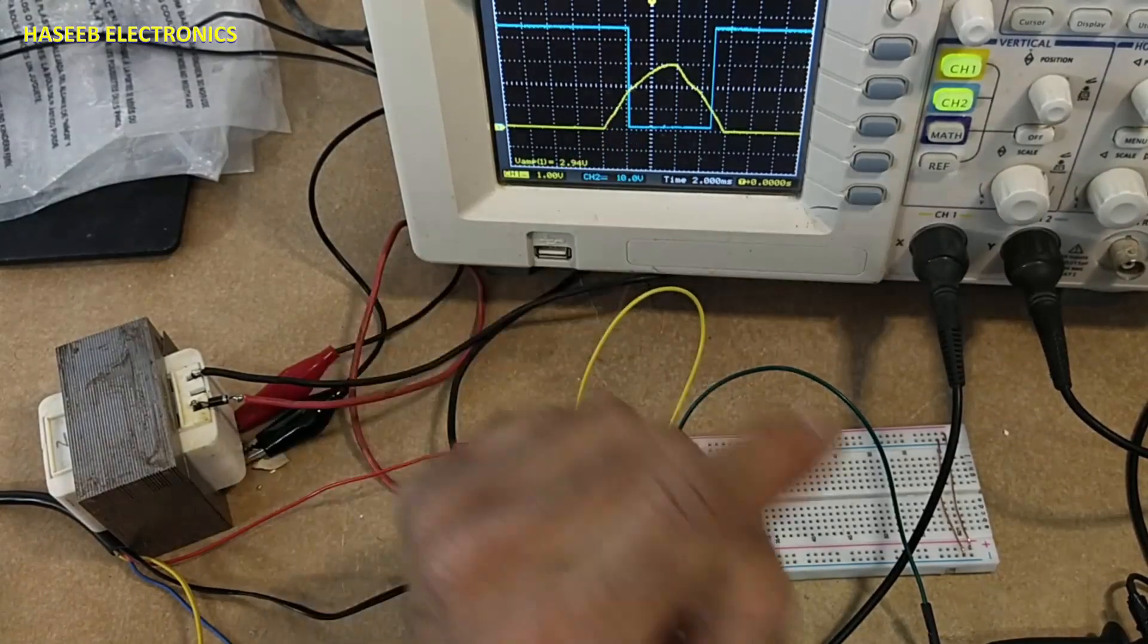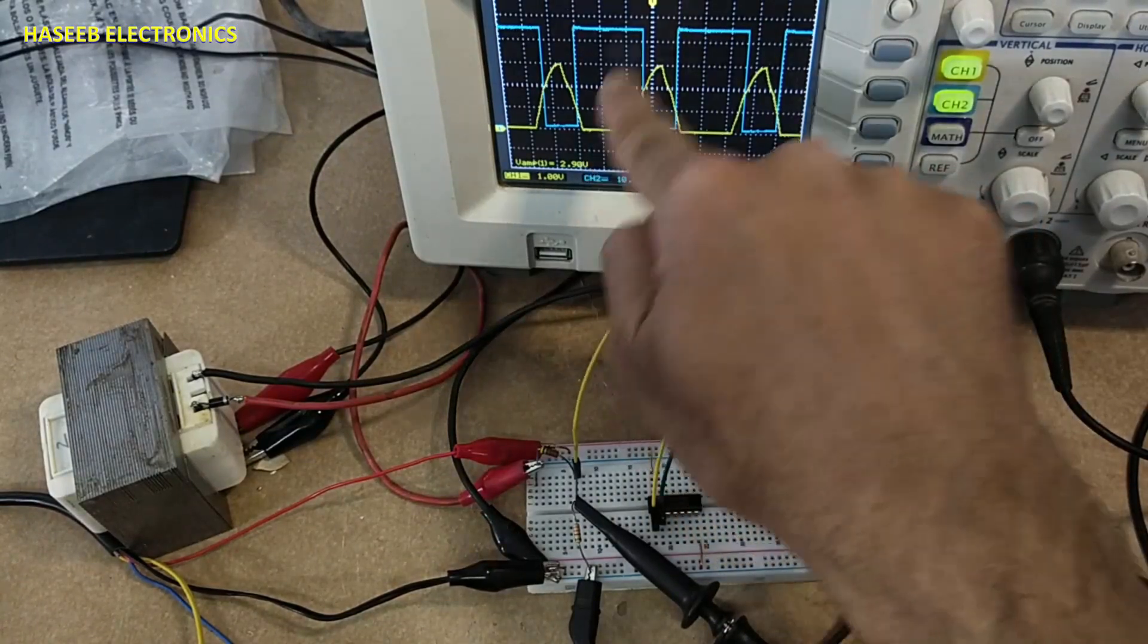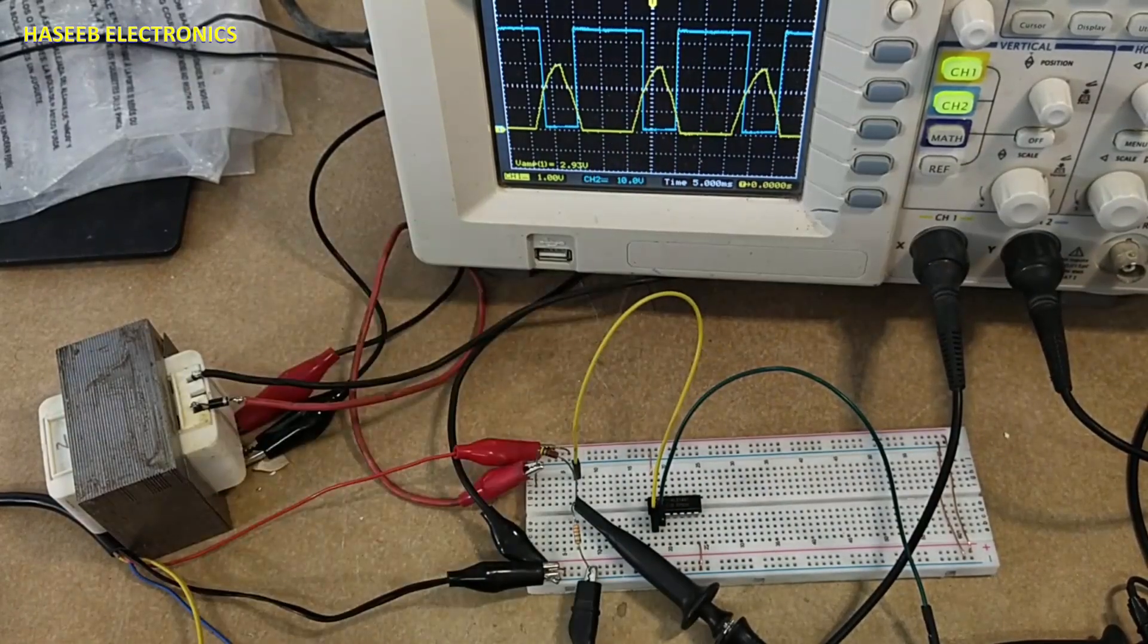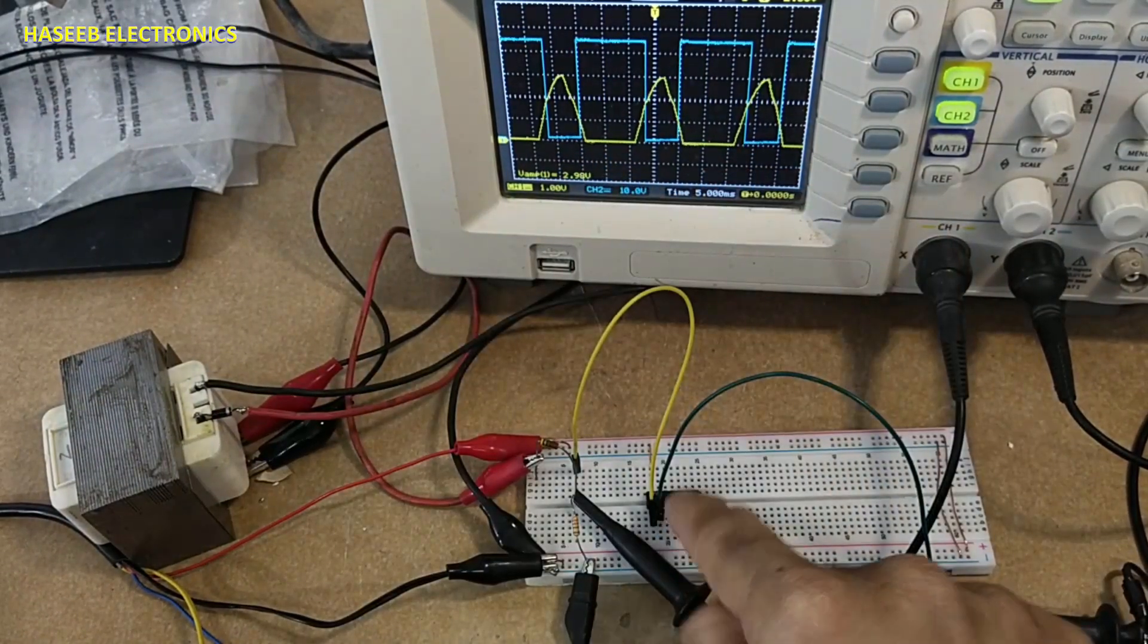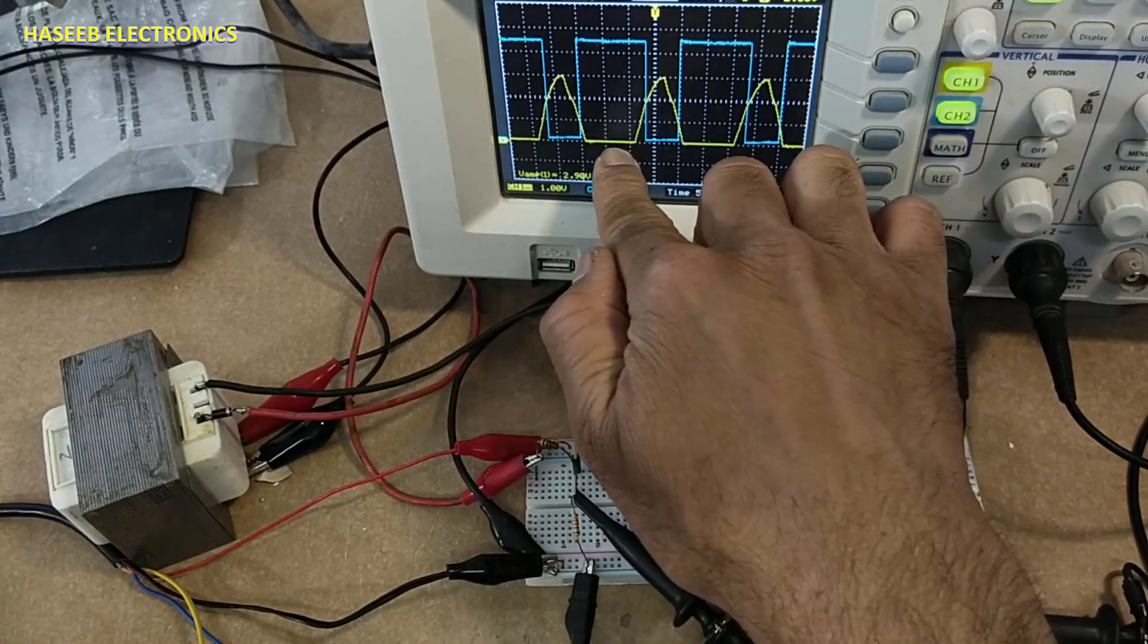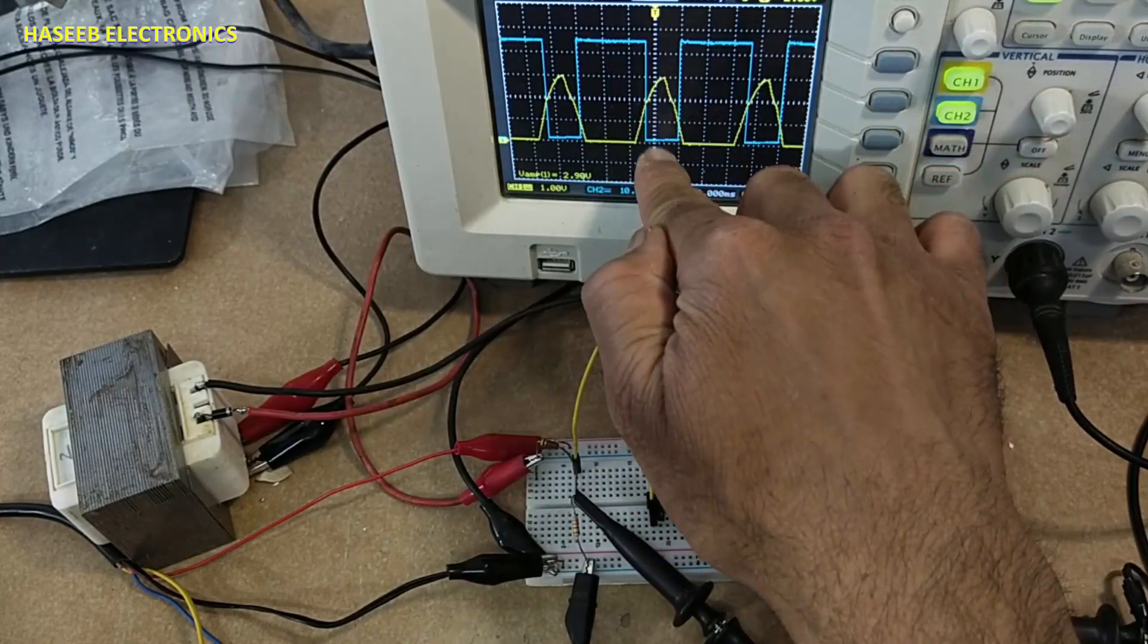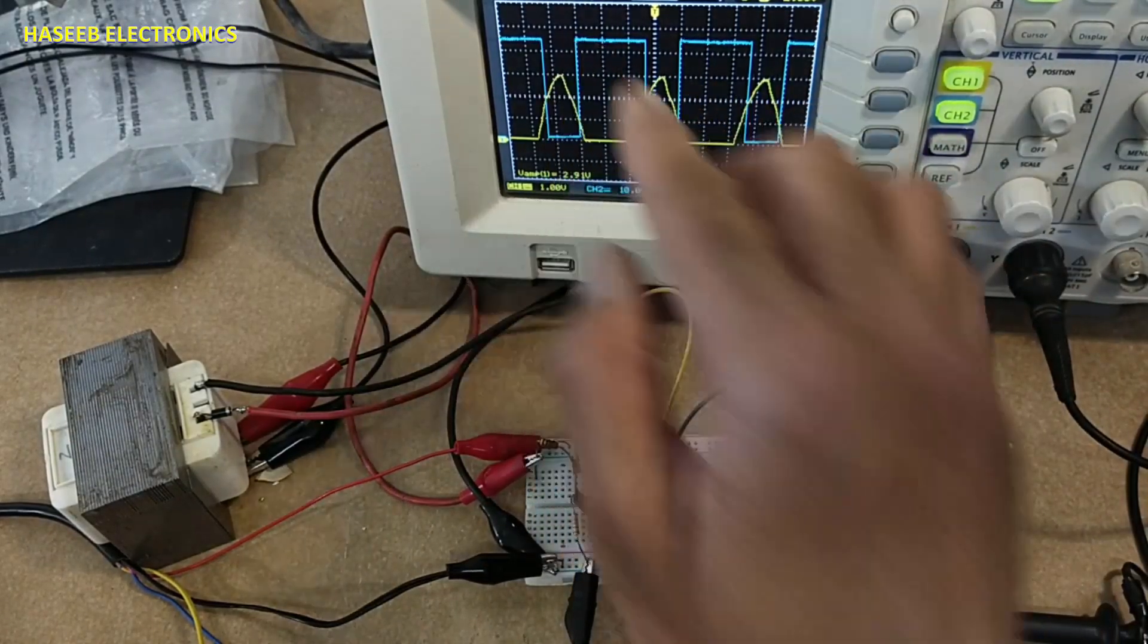So it is called Schmidt trigger input. It will sense the input voltage rising edge, falling edge. Now we are taking inverted output from pin number 2, and it is opposite to the applied signal. When this signal is rising, this signal is falling. When this signal is low, output signal is high because it is inverter.